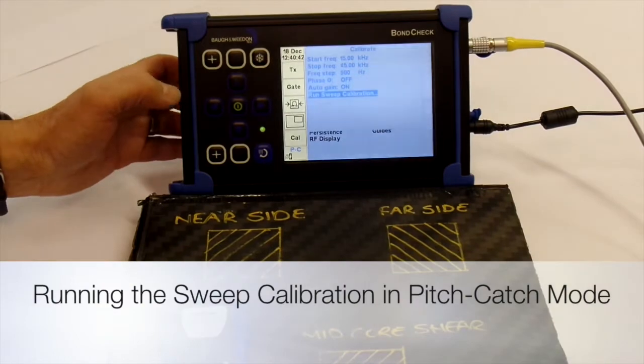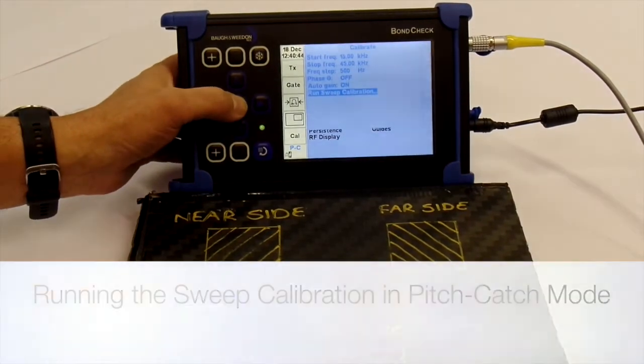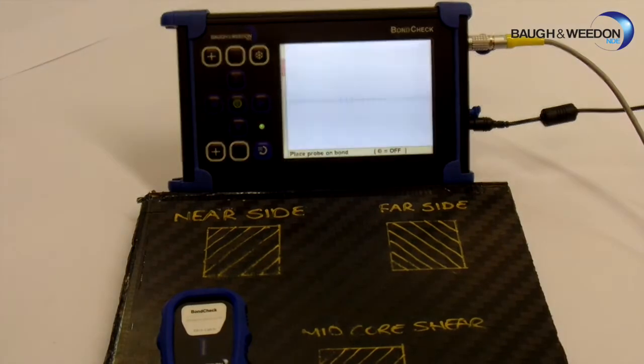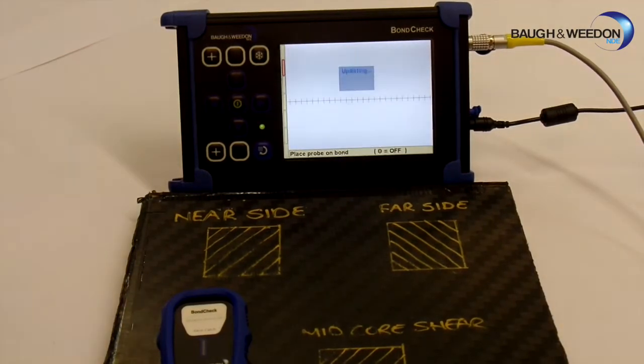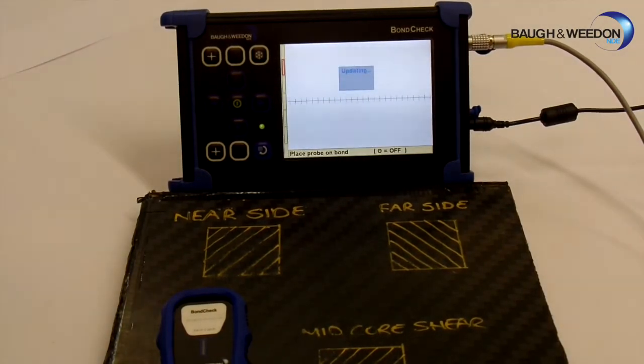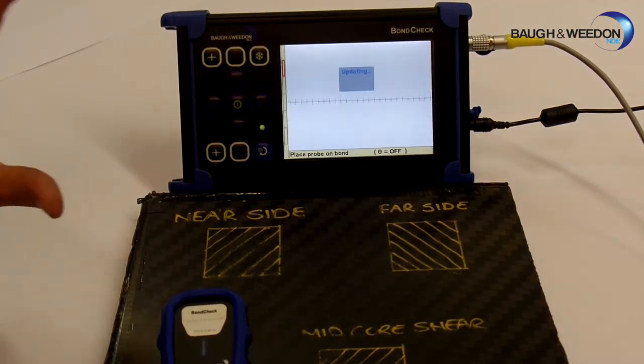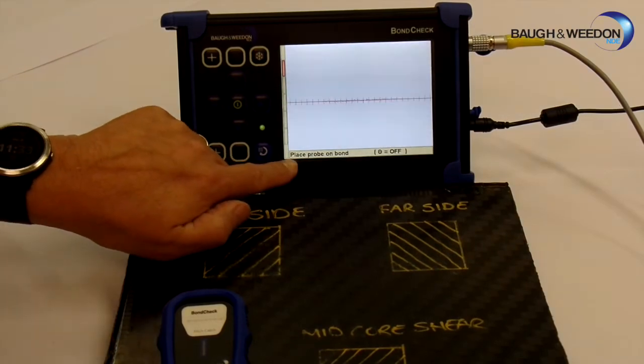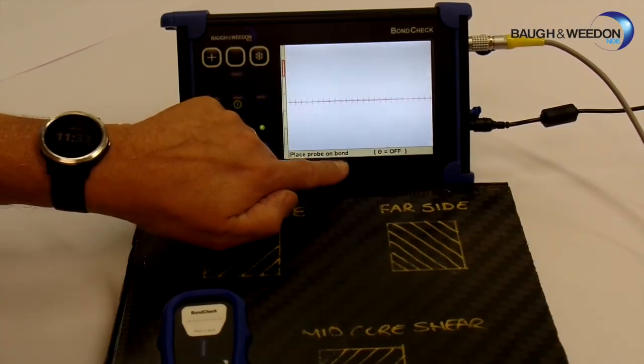Right then, we are now ready to run the sweep calibration. So what I am going to do first, or next, is press the run sweep calibration. It goes into the calibration menu, or settings, it says updating the information.